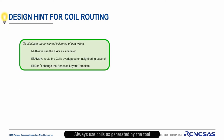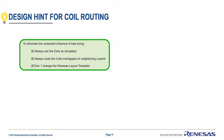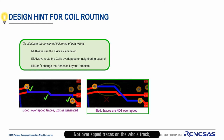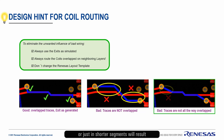Always use coils as generated by the tool, and don't change the exit geometry either. Overlapped routing all the way is the key to good performance. Non-overlapped traces on the whole track, or just in shorter segments, will result in unwanted negative effects in the sensor performance, therefore they must be avoided.